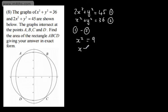Taking the square root of both sides, x is equal to plus or minus the square root of 9, so x equals plus or minus 3.